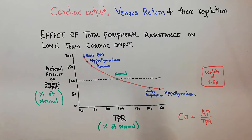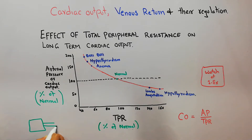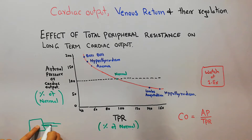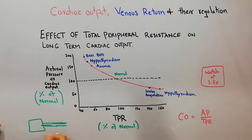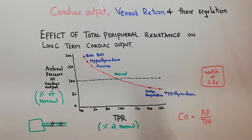Whenever the heart is pumping blood — for example, this is the heart and it is pumping blood into these blood vessels — there is some sort of resistance in these blood vessels. The resistance can be shown with the help of this red color. This is the resistance of the blood vessels.